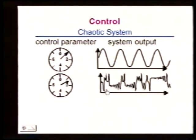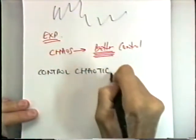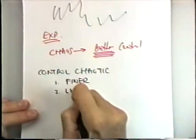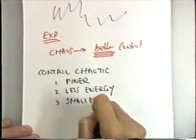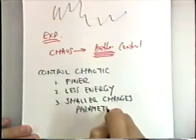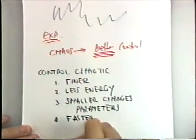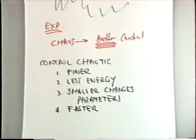What this means is that we can control chaotic systems more finely, with less energy, with smaller changes in the parameters, and faster than linear systems. So this non-linearity—the sensitivity which leads to unpredictability—also allows us to make the system more controllable. And this may be of real biological advantage. Although it looks like all these things would mess up what biological systems do, it's possible that biological systems could take advantage of this to produce much better control.